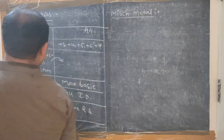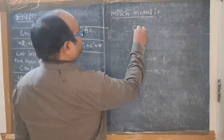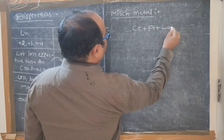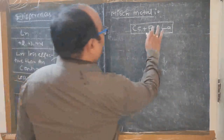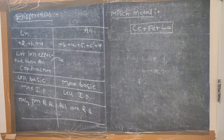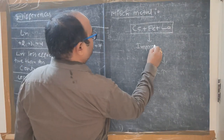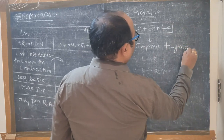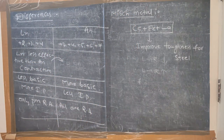Just as D-block elements form alloys, F-block elements also form alloys. One important alloy is mischmetal, which is a combination of cerium, iron, and lanthanum. This mischmetal is used to improve toughness in steel.